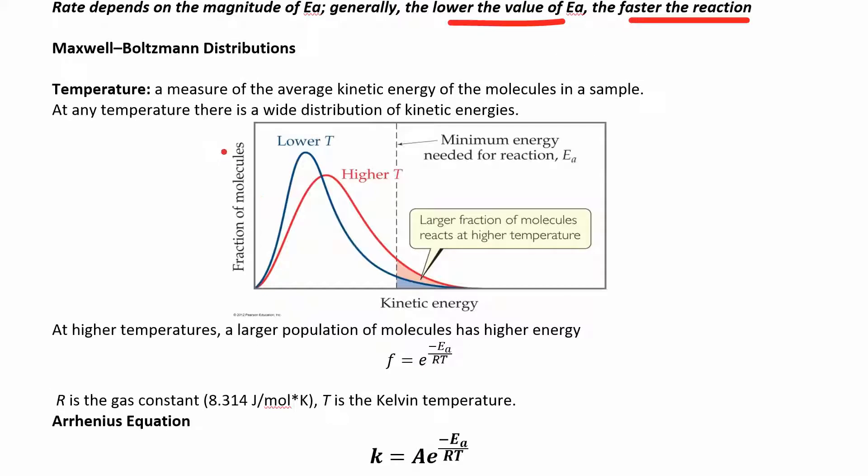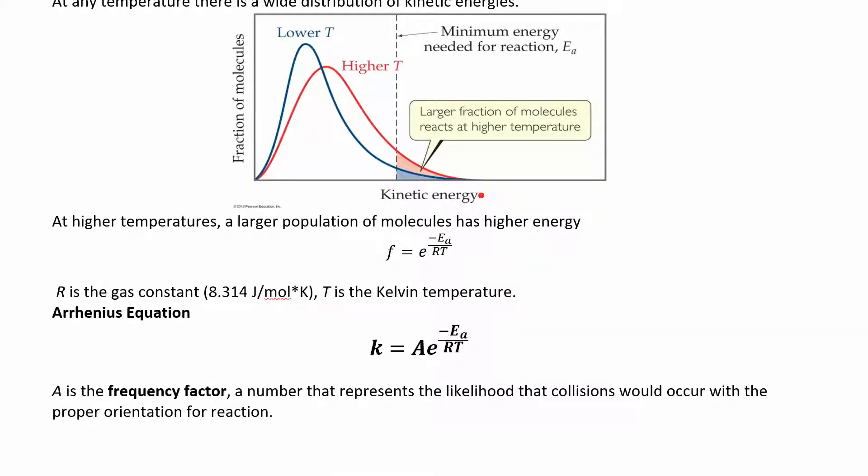Temperature affects the rate. If you were to plot the fraction of molecules versus kinetic energy, you can see we have two different curves here. The blue one is at a lower temperature. The red one's at a higher temperature. At a higher temperature, more molecules have more energy. More molecules are meeting the minimum amount of the activation energy in order to get the reaction to happen. So at a higher temperature, more molecules will undergo the reaction, so the rate will be faster.